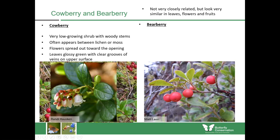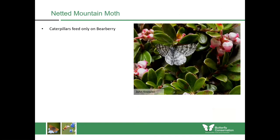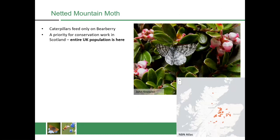Bearberry also has green leaves and red berries with a very similar overall appearance to cowberry as a low-growing shrub. However the flowers tighten to a kind of waist — distinctly urn-shaped — before opening, so the two flowers are quite different. The leaves tend to be leathery and net-veined on the undersides. Bearberry is important because it's the main caterpillar food plant of the netted mountain moth, a conservation priority for us in Scotland as the entire UK population is found here. The species may be threatened by tree planting and encroachment from taller vegetation, since the low-growing food plants can't compete for light.